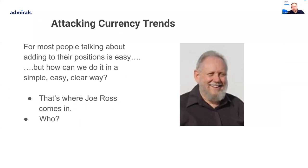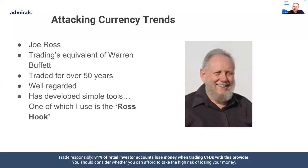For most people, talking about adding to their trades and building a position is easy in theory, but how can we actually do it in a simple, clear way? That's where we're going to use an old trading mentor called Joe Ross, who you may or may not have heard of. Joe Ross was kind of the equivalent of Warren Buffett — traded for over 50 years, very well regarded. He developed lots of very simple tools for using markets, one of which I use is what's called the Ross Hook.